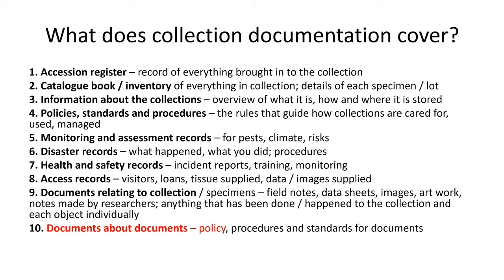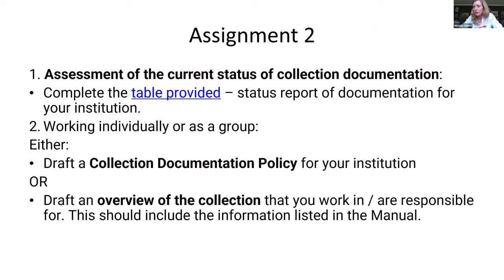So the second assignment — and this is a very valuable aspect for anybody implementing the manual — it's early on in the process. If you don't have systems and processes for your documents, you're going to end up losing documents, not being sure where they are, and you'll duplicate efforts. So the first thing to do is an assessment of the current status of your collection documentation — to look at what you've got, where it is, how it's stored, and who's got access to it. That was the first part of the assignment: to complete a table.